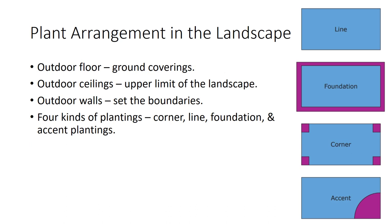Design of plantings begins with the outdoor room concept. The outdoor room has the same boundaries as an indoor room: outdoor floor, outdoor ceiling, and outdoor walls. The outdoor floor is the ground covering, which in most cases is turf, sand, gravel, brick, wood, water, and other materials, whereas the outdoor ceiling is the upper limit of the landscape, which consists of covered patios and trees. The outdoor walls of the room set the boundaries, which consist of flower beds, shrubs, and fences.